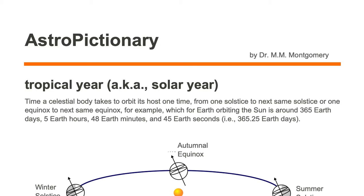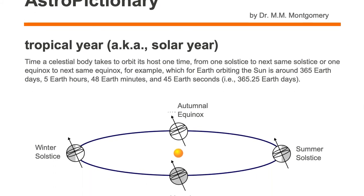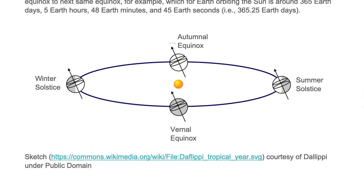That is 365.25 Earth days. Here we're looking at a sketch of the Earth orbiting the Sun, and as you can see it's not drawn to scale.